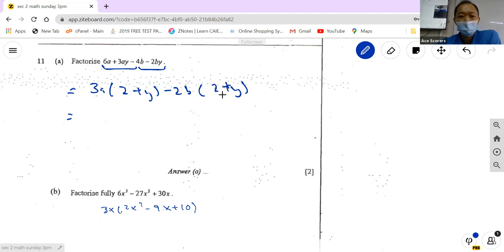So how do you check that this is correct? You check by doing the reverse. That means you multiply this in. If you take negative 2b times inside, you should get back this thing. Once we are done with factorizing the pair, you can take out 2 plus y. So we take out 2 plus y, we'll have 3a minus 2b. And this is the final answer. Okay? Is it okay? Next.